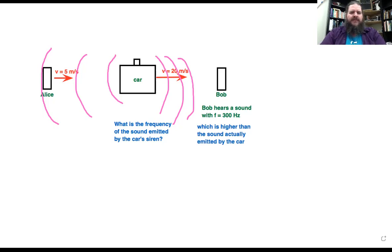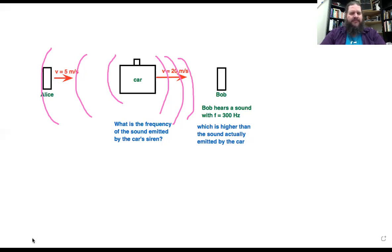In general, possibly the source and the observer could both be moving. In this particular case, Bob the observer is not moving. But let's get the general Doppler equation and then fill in the details for specific examples. If both the observer and the source could be moving, the equation would be: f-observer equals (V plus or minus V-observer) over (V plus or minus V-source), times f-source. V itself is just the speed of the wave — in this case, the speed of sound.